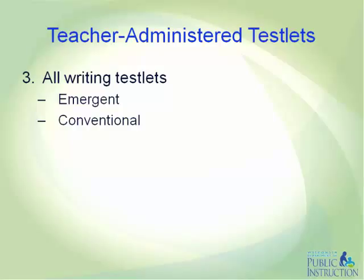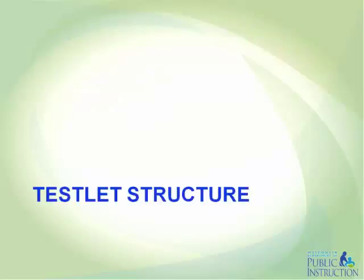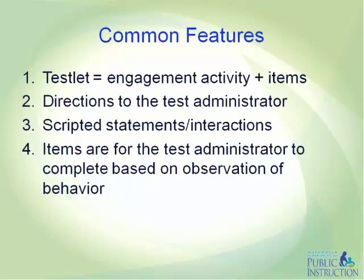Examples of allowable writing tools include pens, pencils, keyboards, alternate keyboards, eye gaze displays of letters, alphabet flip charts, other alternate pencils, talking word processors, and word prediction — all are accessible tools for students. Next, we will review the structure of each of these three types of teacher-administered testlets.